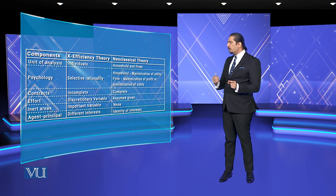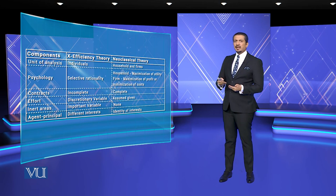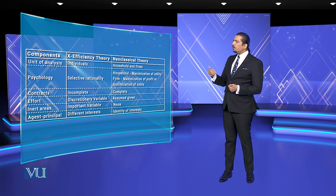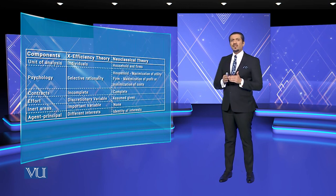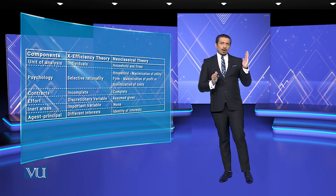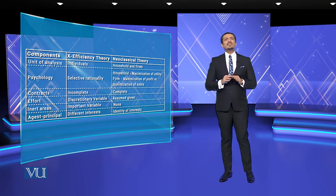Secondly, contracts can be incomplete or complete. Effort is on a discretionary basis — what are its variables? Important variables include how many inert areas there are, and then in agent-principal, there are different interests. Where is your interest going, and how do you identify different interests — meaning how do you reach out to new segments? To understand the total overall market, whether monopoly, oligopoly, or duopoly, complete market analysis must be done not just on a functional basis but also on an emotional basis — which we can also call a sentimental basis. Thank you very much.